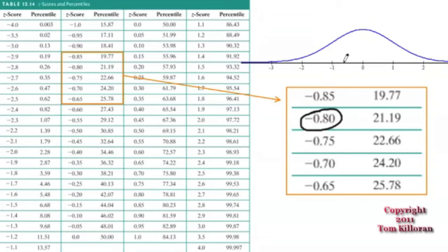Negative 0.8 is someplace around here. And the way this table works is it takes all the values or all the possibilities or the percentage of everything that lies below negative 0.8. So if we go to the table at negative 0.8, the z-scores will be in one column, and these percentiles going to the left are in the other column. So at negative 0.8, our percentile is 21.19.